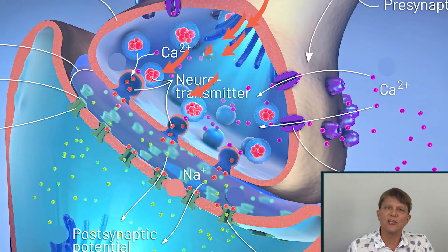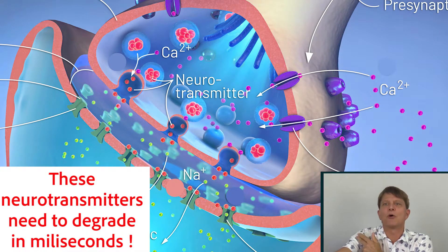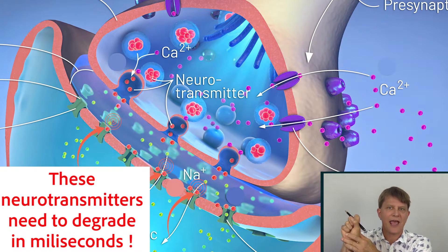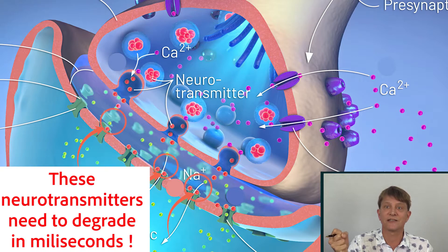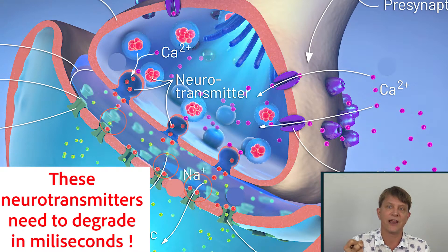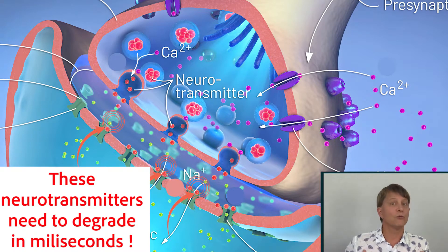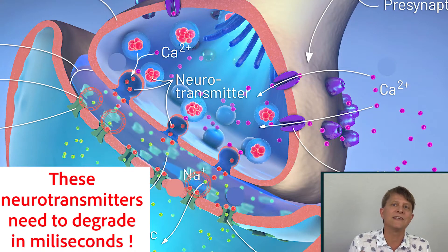Another important thing to remember is that you have to be able to degrade that neurotransmitter almost immediately. For example, if a peripheral nerve instructing the muscles of the hand using acetylcholine couldn't degrade that acetylcholine rapidly, your hand muscle would be constantly contracted. For the respiratory system, you need muscles to relax and contract, so those neurotransmitters must be degraded really, really quickly.